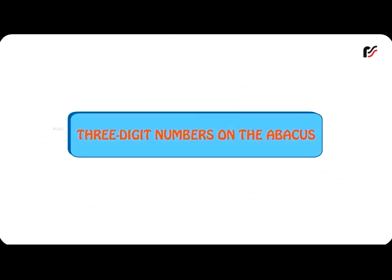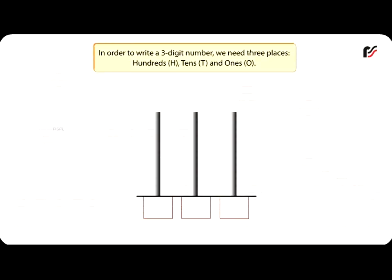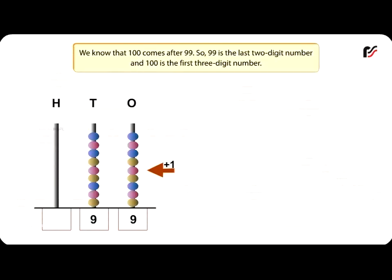Three-digit numbers on the abacus. In order to write a three-digit number, we need three places: hundreds (H), tens (T), and ones (O). We know that hundred comes after ninety-nine. So ninety-nine is the last two-digit number, and one hundred is the first three-digit number.